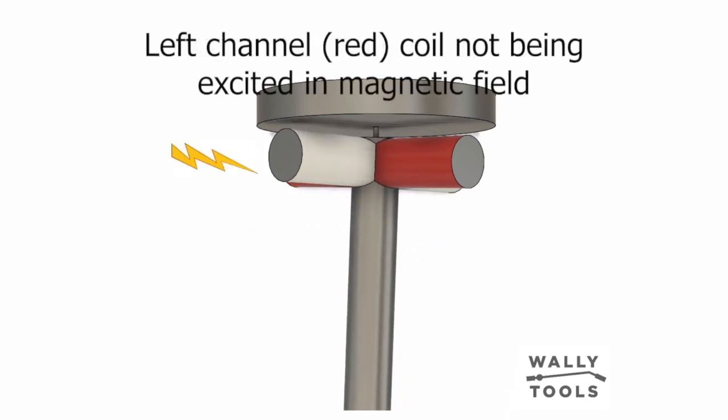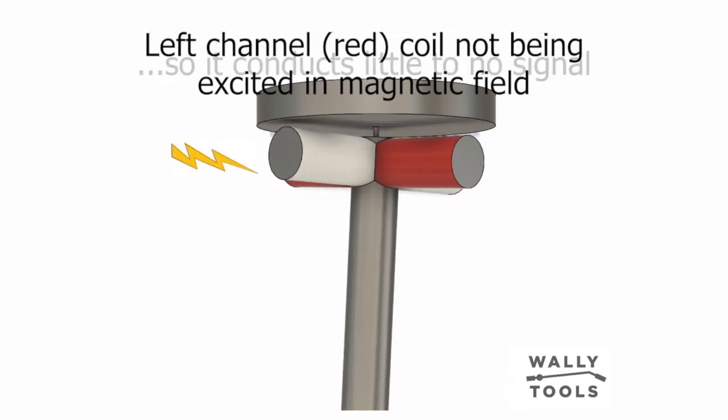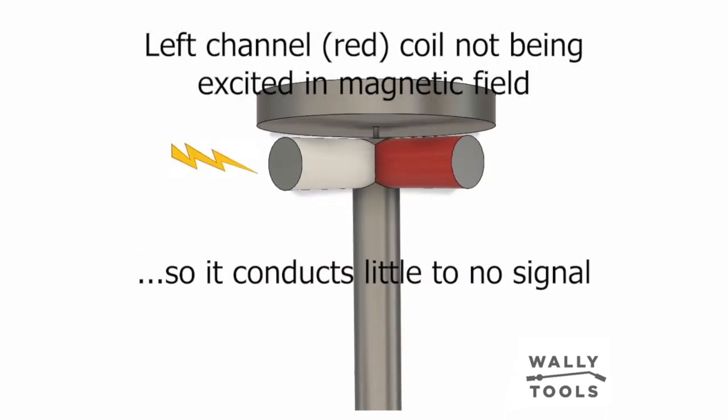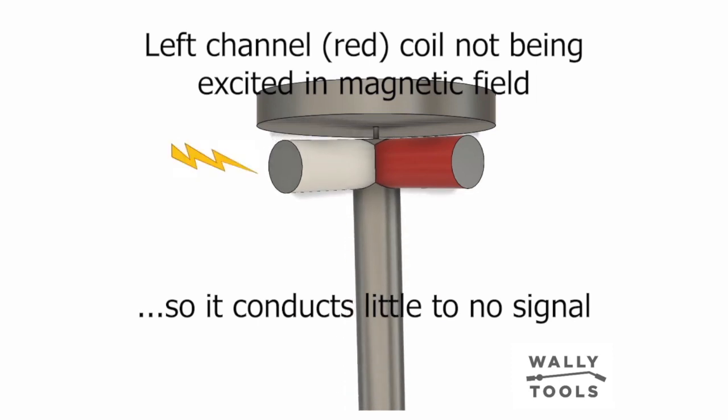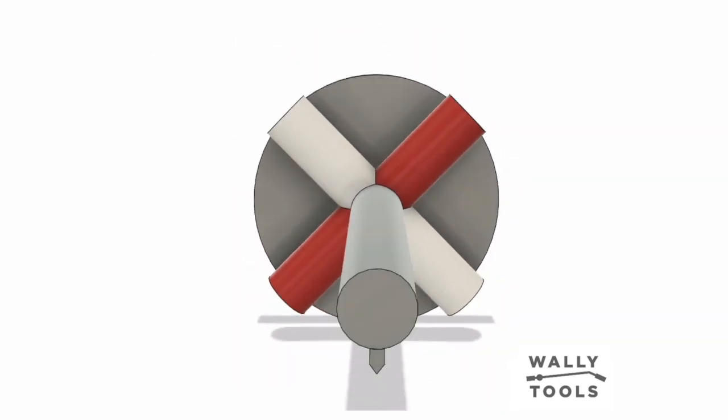You'll notice that the red coil formers, which correspond to the left channel signal, are simply spinning in the magnetic flux field, so they are throwing off an infinitesimally small signal.